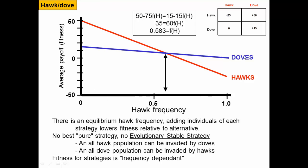Let's think about the dove strategy. If there are no hawks, the opponent is always a dove and the strategy gives a payoff of positive 15. If the population is all hawks and you're playing the dove strategy, you're always playing against a hawk and always getting zero. So the average payoff for the dove strategy declines from 15 when there are no hawks down to zero when the population is entirely hawks.